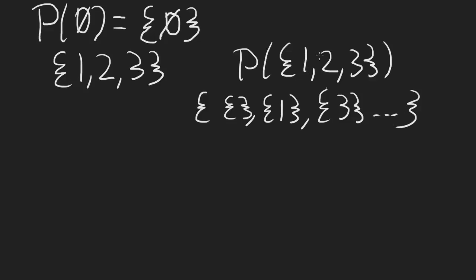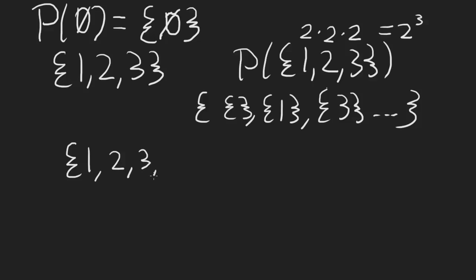For each element, I can make an independent choice about whether or not to include it in a subset — that's two choices per element. So I have 2 × 2 × 2 ways to form a subset of {1, 2, 3}, which is 2³. In general, if I had a set with n elements — say {1, 2, 3, ..., n} or any other set with n elements — then the power set of that set would have 2ⁿ elements.